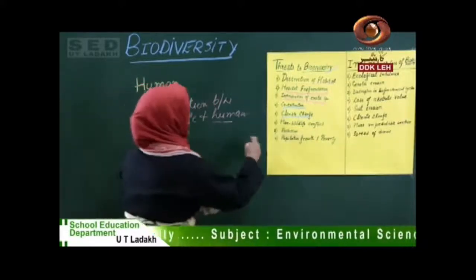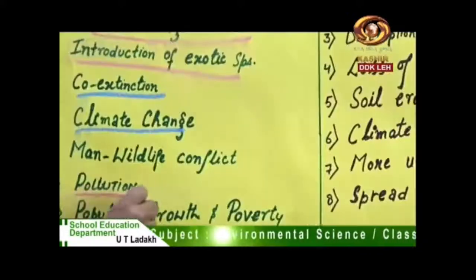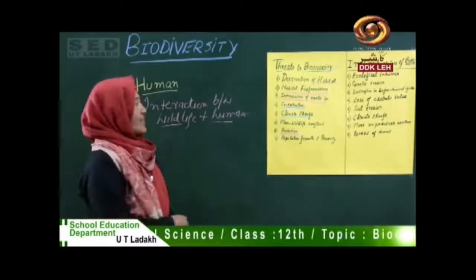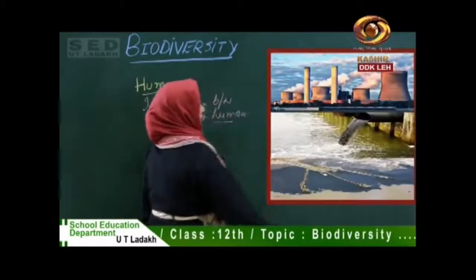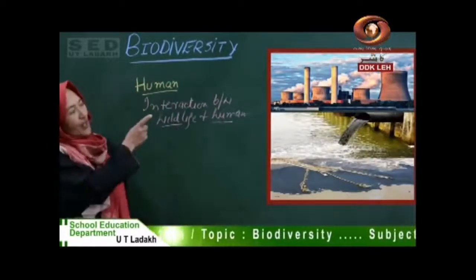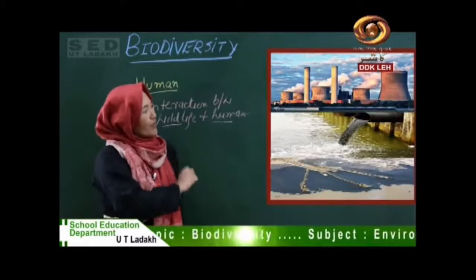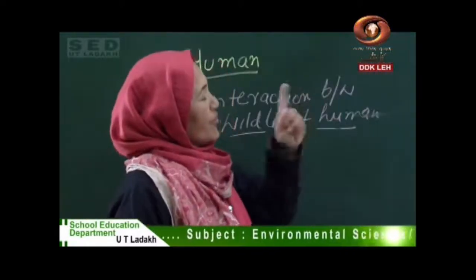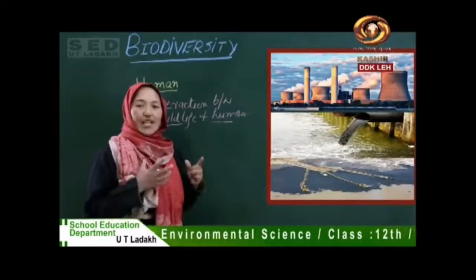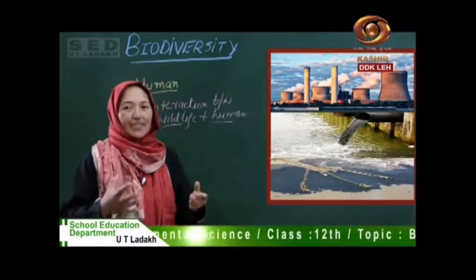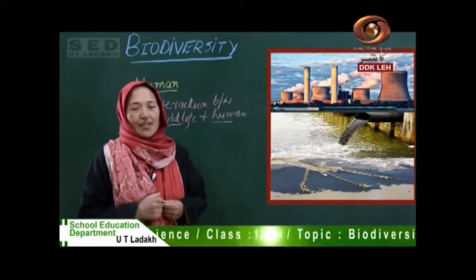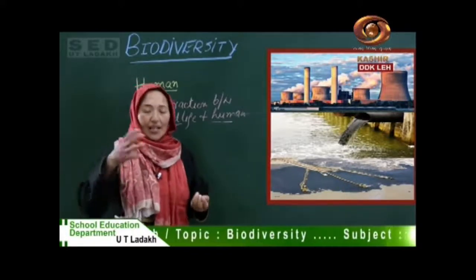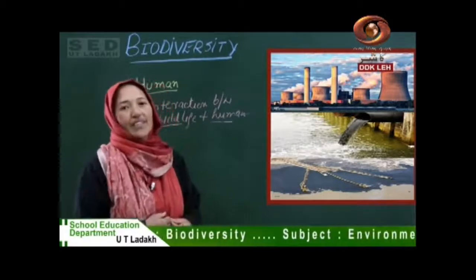The second point is pollution. Pollution creates problems in many ways. The first type is air pollution, the second is water pollution, and the third is oil spill. Air pollution destroys the forest. Water pollution destroys fish and aquatic animals.